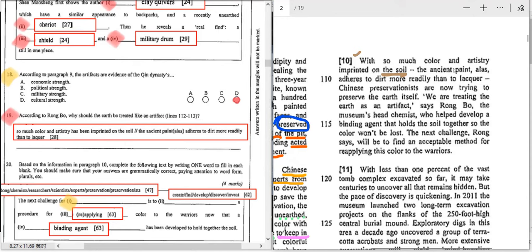If you have been listening to me closely, you should have noticed that I have rephrased the word earth into soil, and therefore, you have the word soil here. That's the trick. With so much color and artistry imprinted on the soil, the ancient paint adheres to dirt more readily than to lacquer. Chinese preservationists are now trying to preserve the earth itself. So here lies the answer, actually.